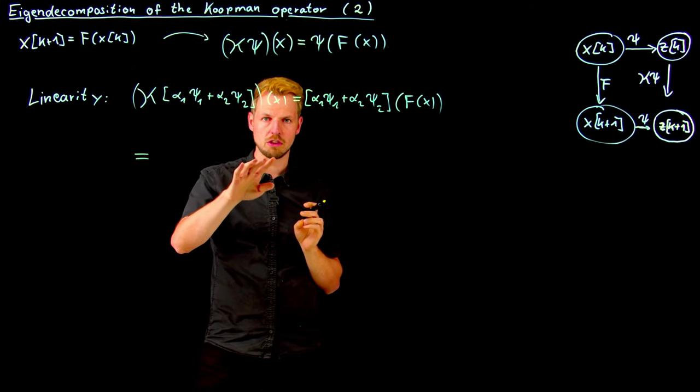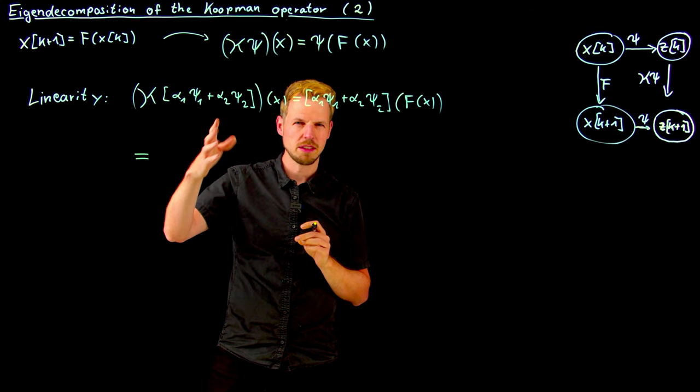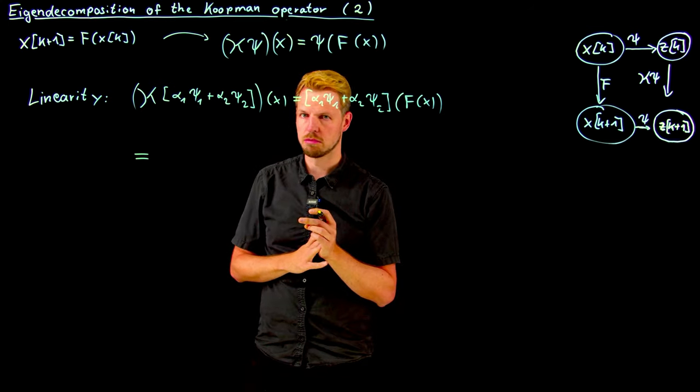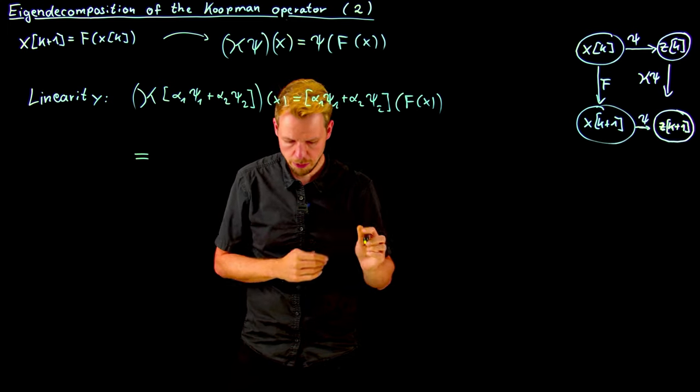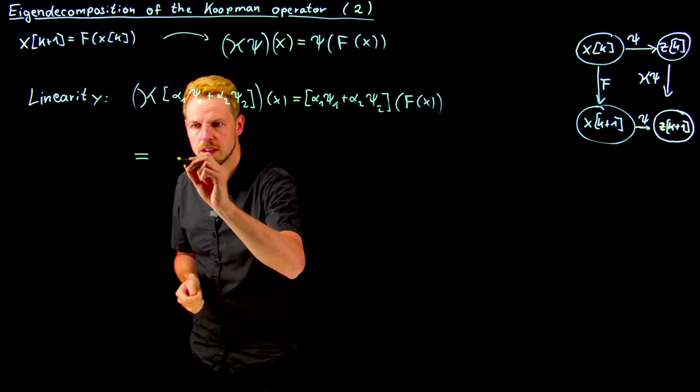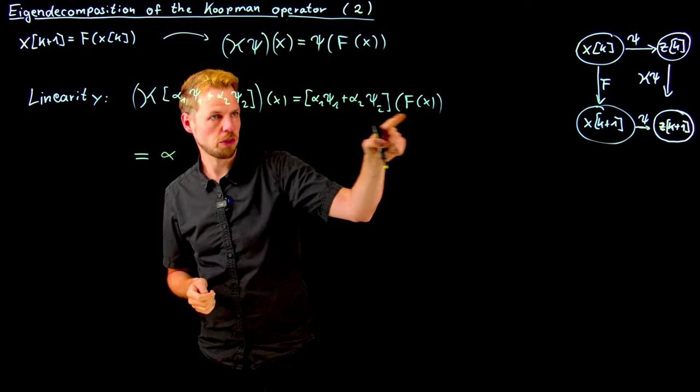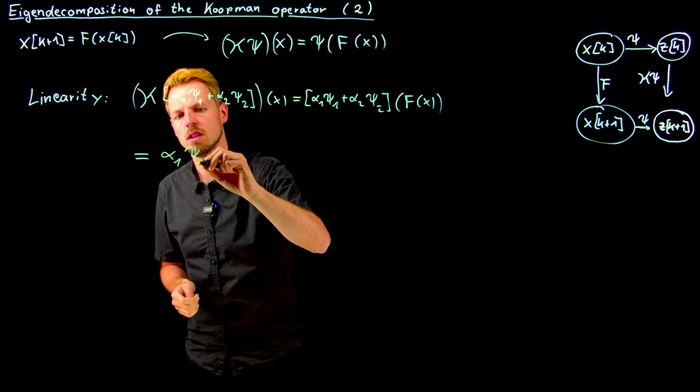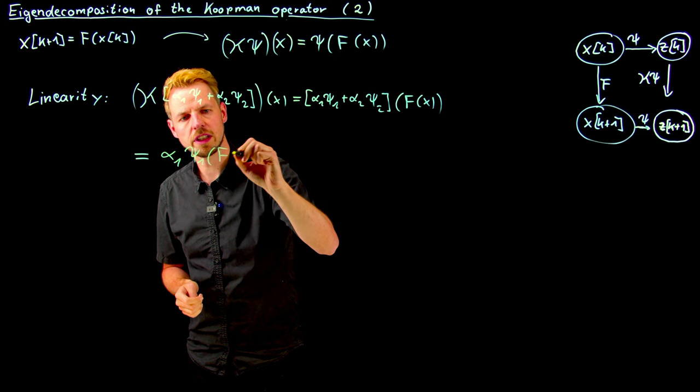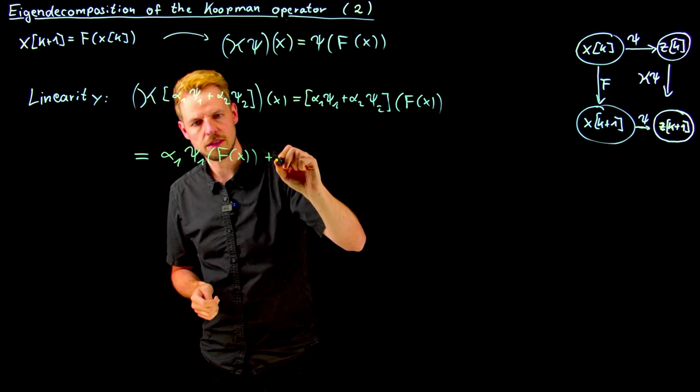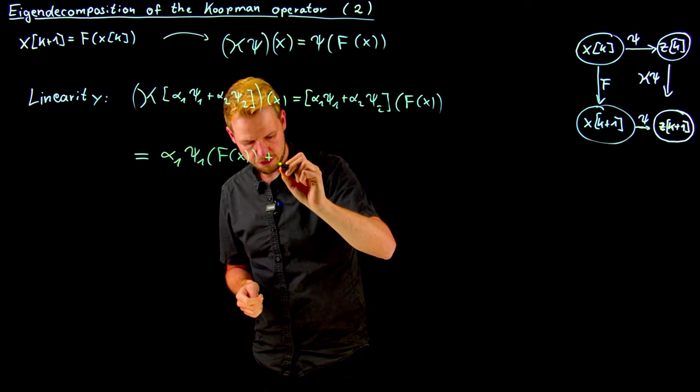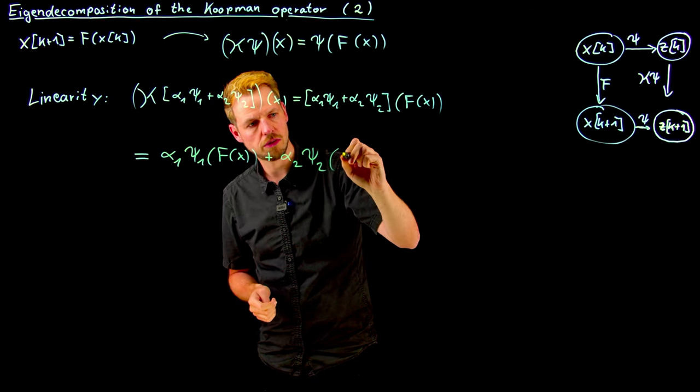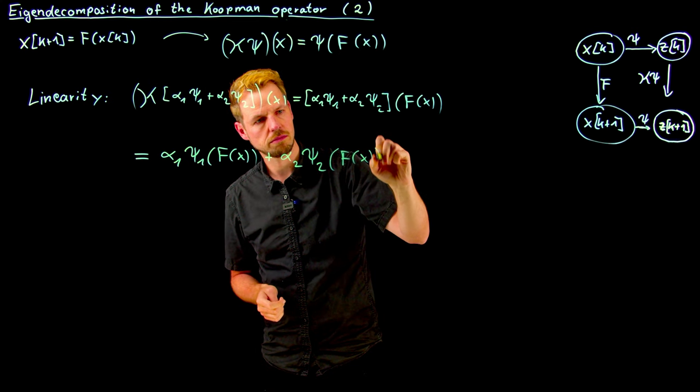What you can do now is simply exploit the linearity. This observable function psi is an element of a function space, a linear vector space but of infinite dimension. Anyway, still the concept of linearity applies, which means that we can simply say this expression here is the same as alpha_1 psi_1 of F(x) plus alpha_2 psi_2 of F(x).